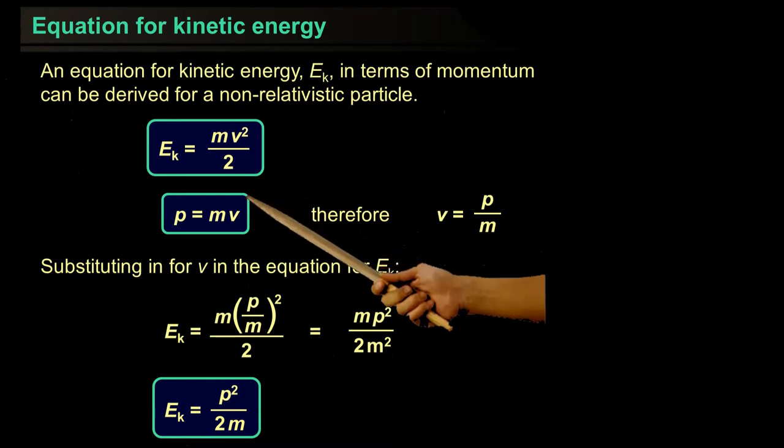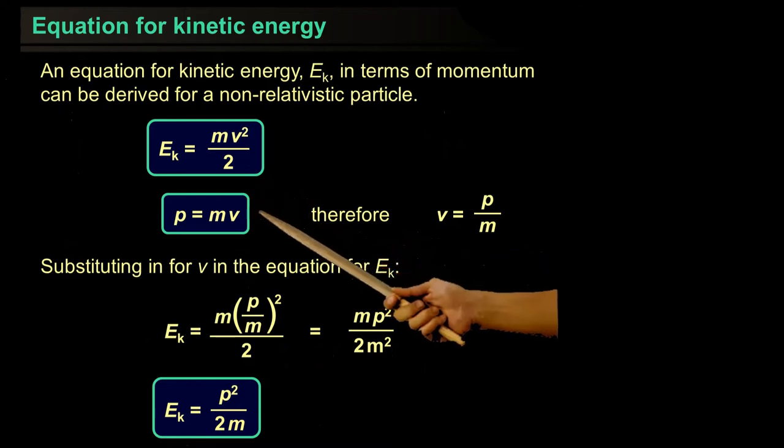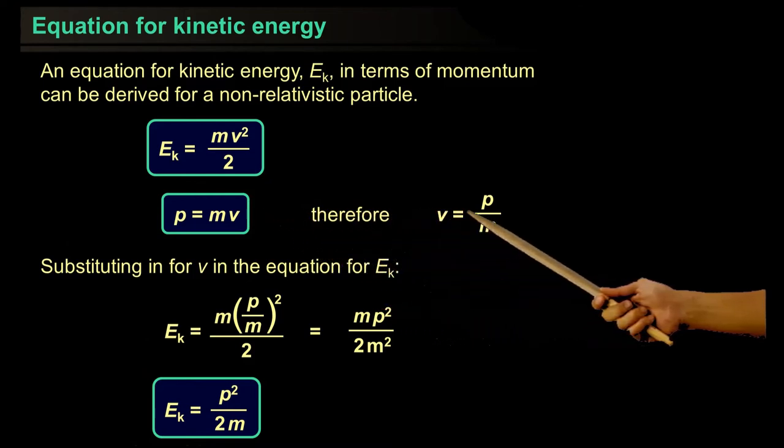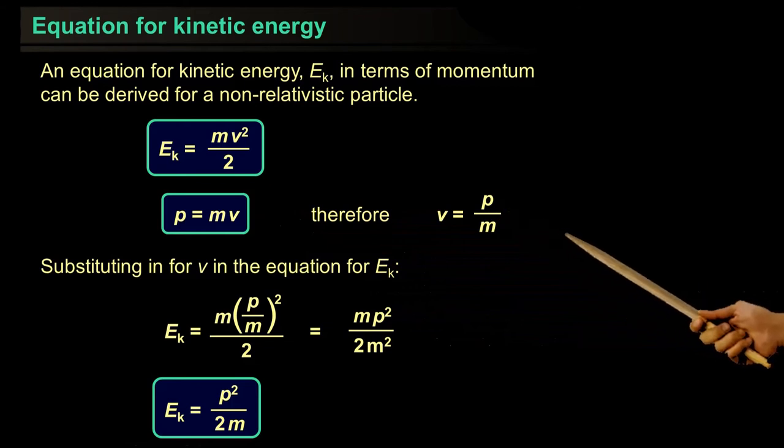If we want to take the velocity as the subject of the formula, velocity equals p over m. If we replace the value of v from equation two into equation one, the equation becomes this.